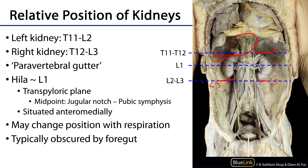The kidneys are said to be within the paravertebral gutter. That space is difficult to appreciate in a frontal view, but becomes more evident in transverse section. To understand this, note that deep to the neurovasculature is the vertebral column, so the kidneys are lateral to the vertebral column in the paravertebral gutters.